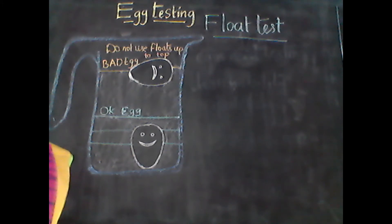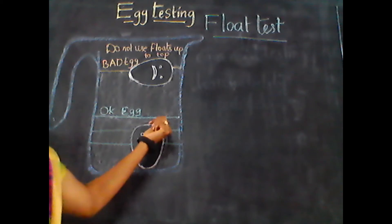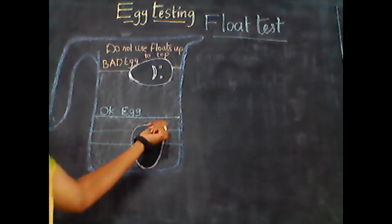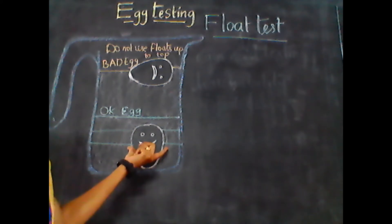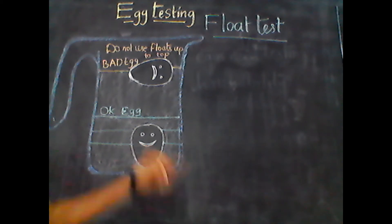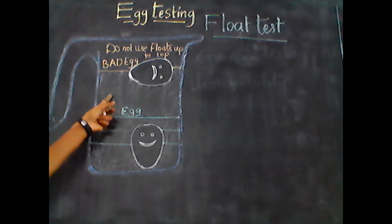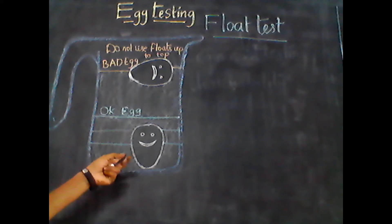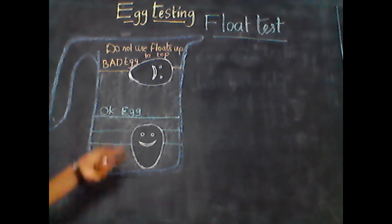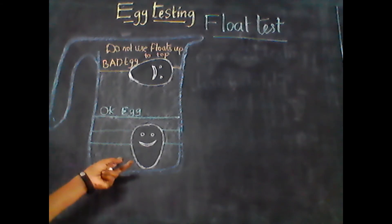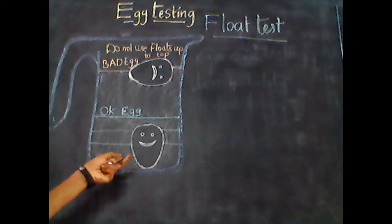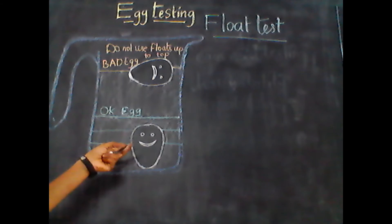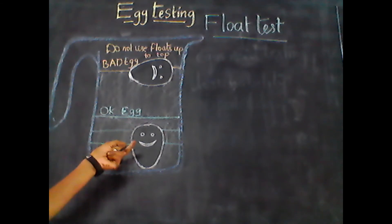After 24 hours of laying, take sufficient water in a deep bowl and allow the water to settle without any waves. Then place the eggs to be tested slowly in the water and again wait for the water to settle.